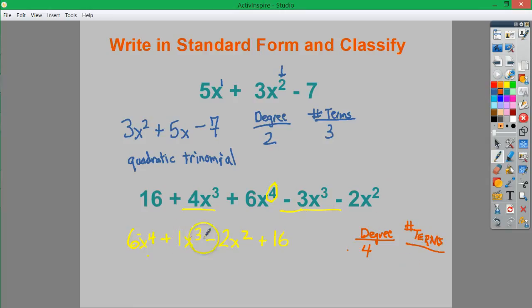I would say that we have 1, 2, 3, 4 terms. So the gigantic name that tags itself onto the end of this is we're dealing with a quartic polynomial of 4 terms. So that's naming them and classifying them.